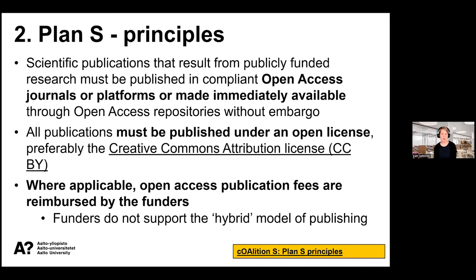Plan S has one major aim and ten different principles. The most important principle is that scientific publications resulting from publicly funded research must be published in open access journals or otherwise made immediately available without any embargoes. In addition, these publications must be licensed under open licenses — Creative Commons attribution licenses are recommended. Plan S does not support the current publishing model where both subscription fees and publication fees apply, the so-called hybrid model. Only publication fees in open access journals should be reimbursed by the funders.